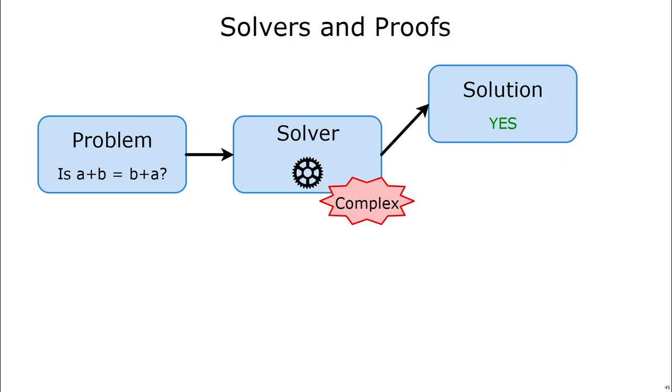However, you might run into a problem. Your solver's really complicated because it can do so many things, and you might not be able to trust the solution that it gave you to this problem. Luckily, modern solvers also produce proofs, which are like a step-by-step instruction set that you can follow to see how the solver was able to get to the solution it got.